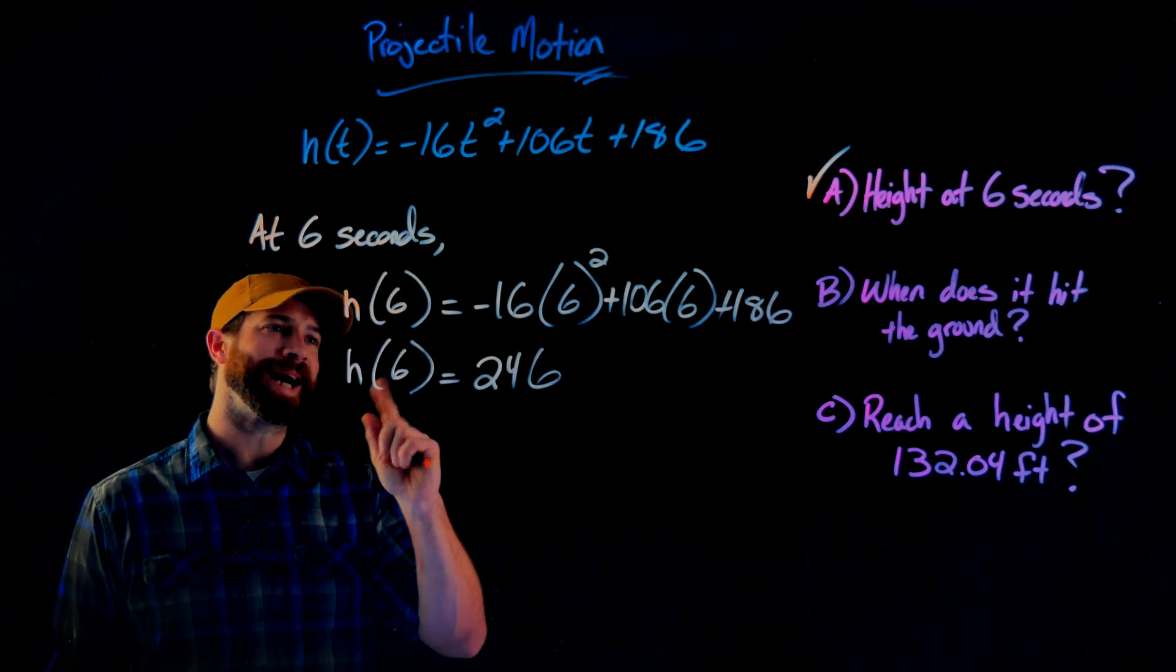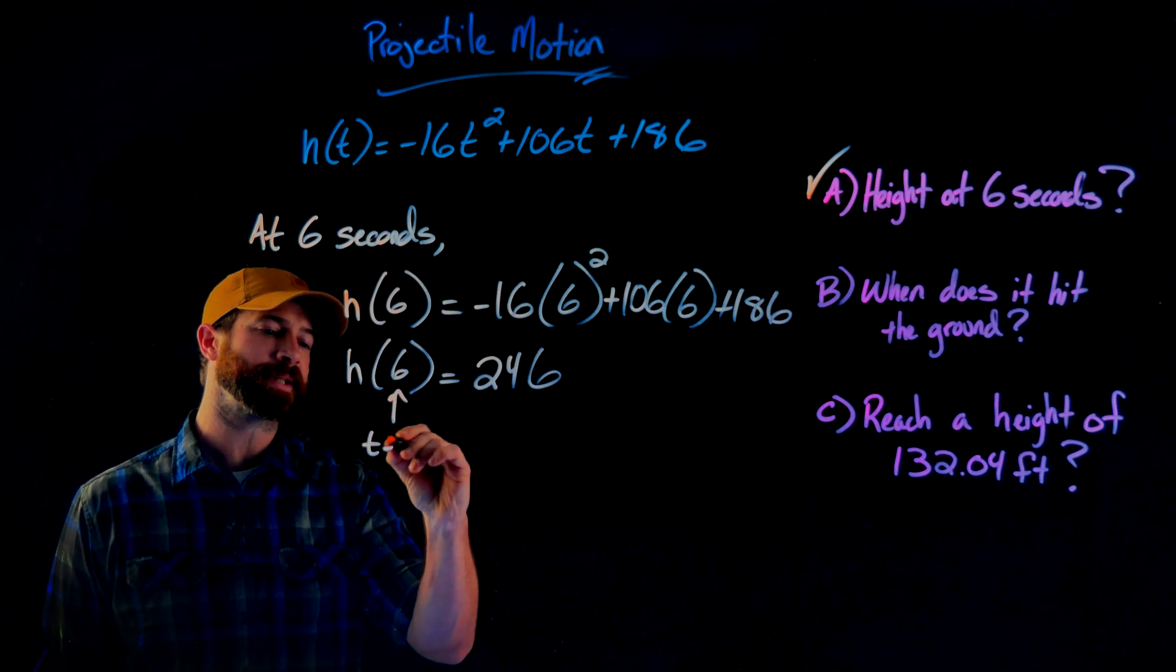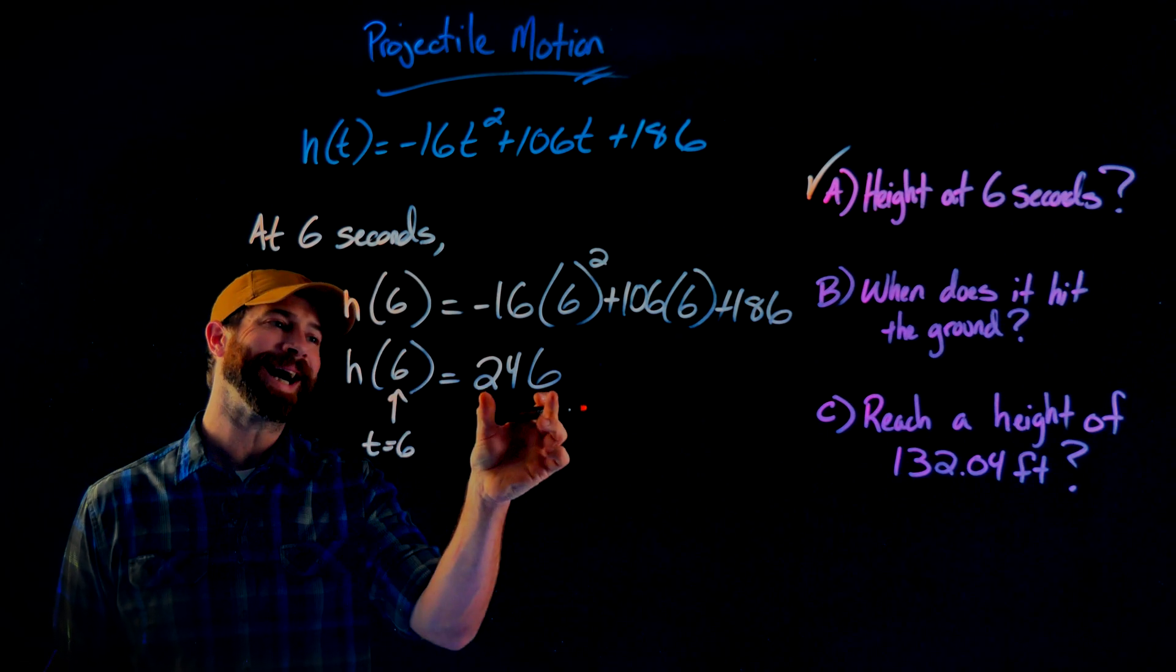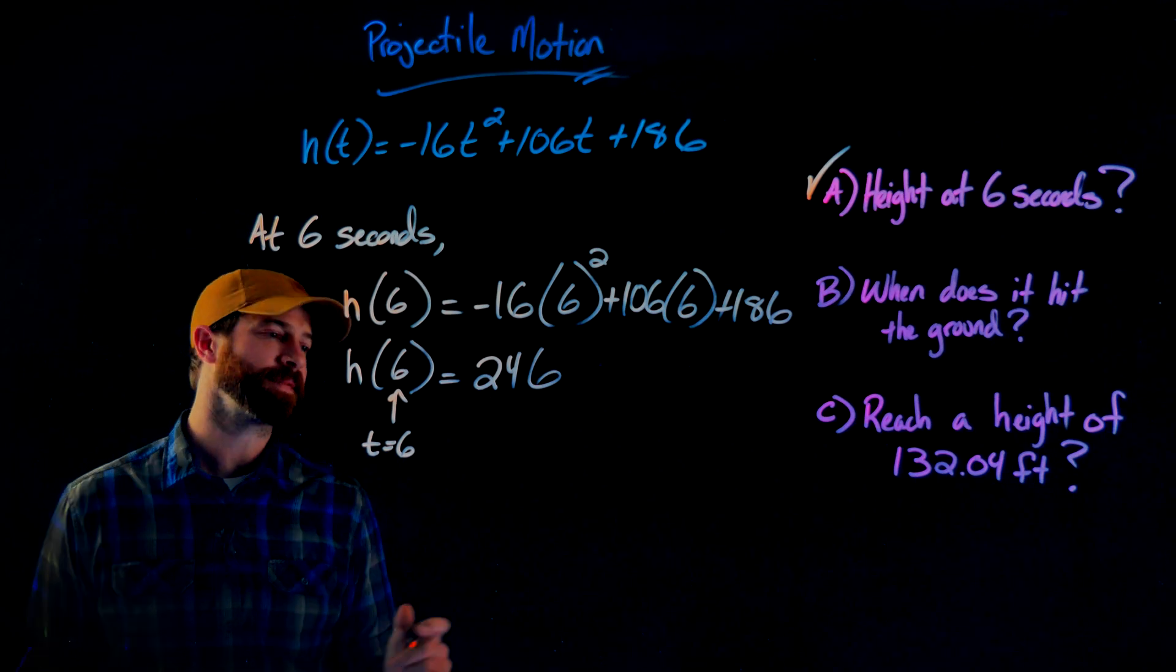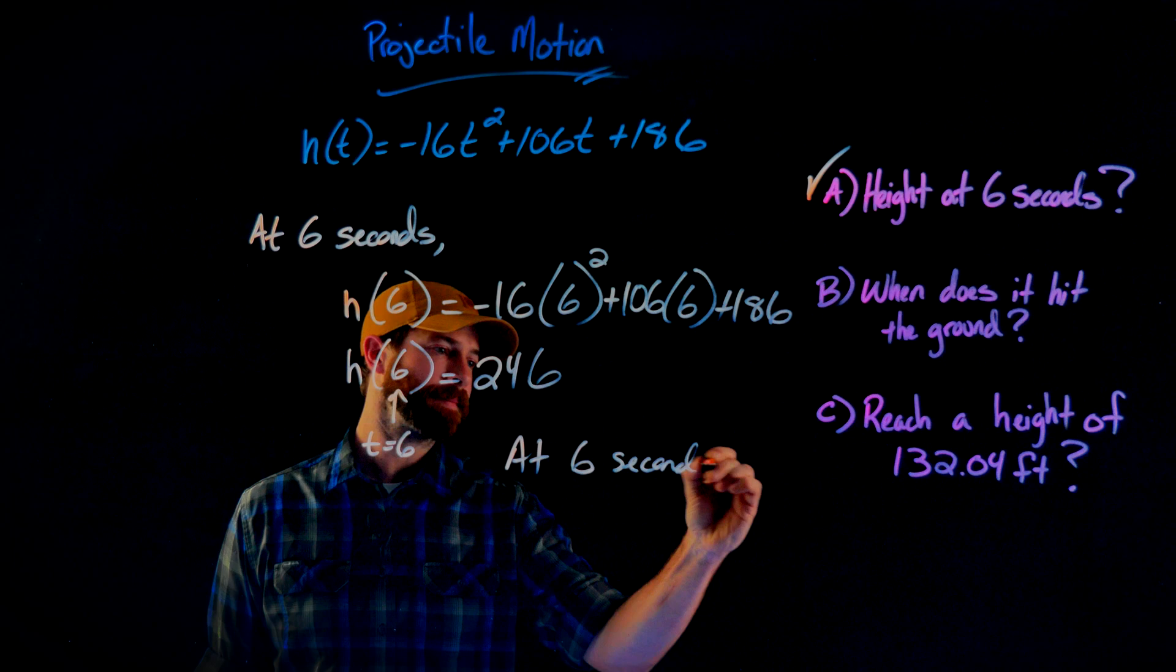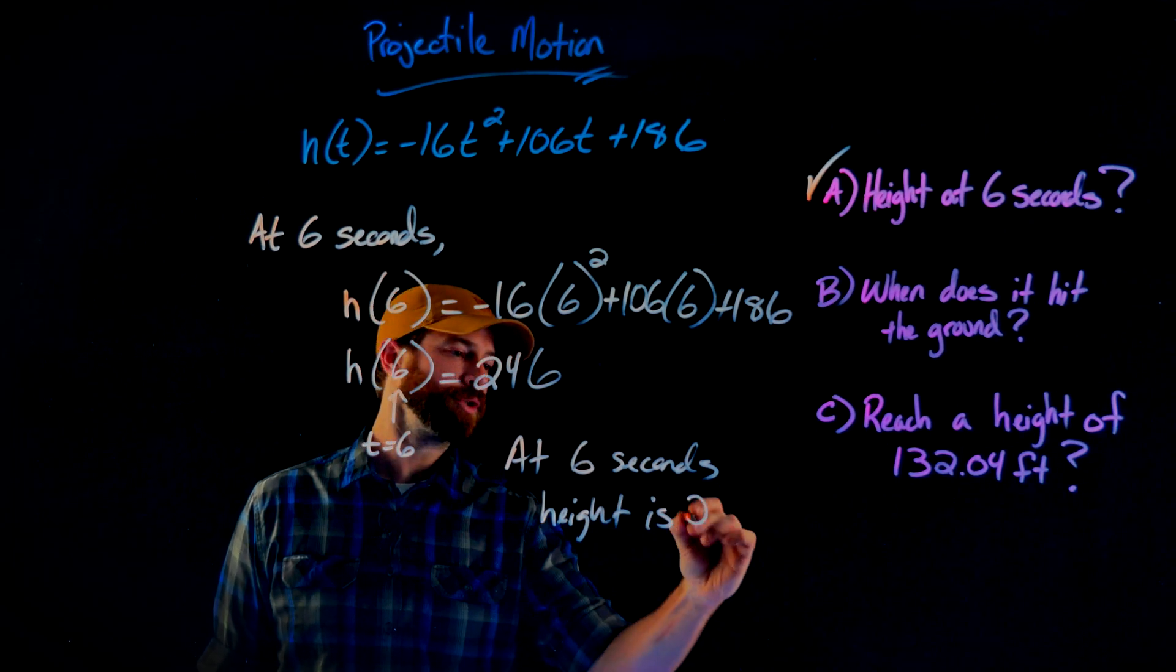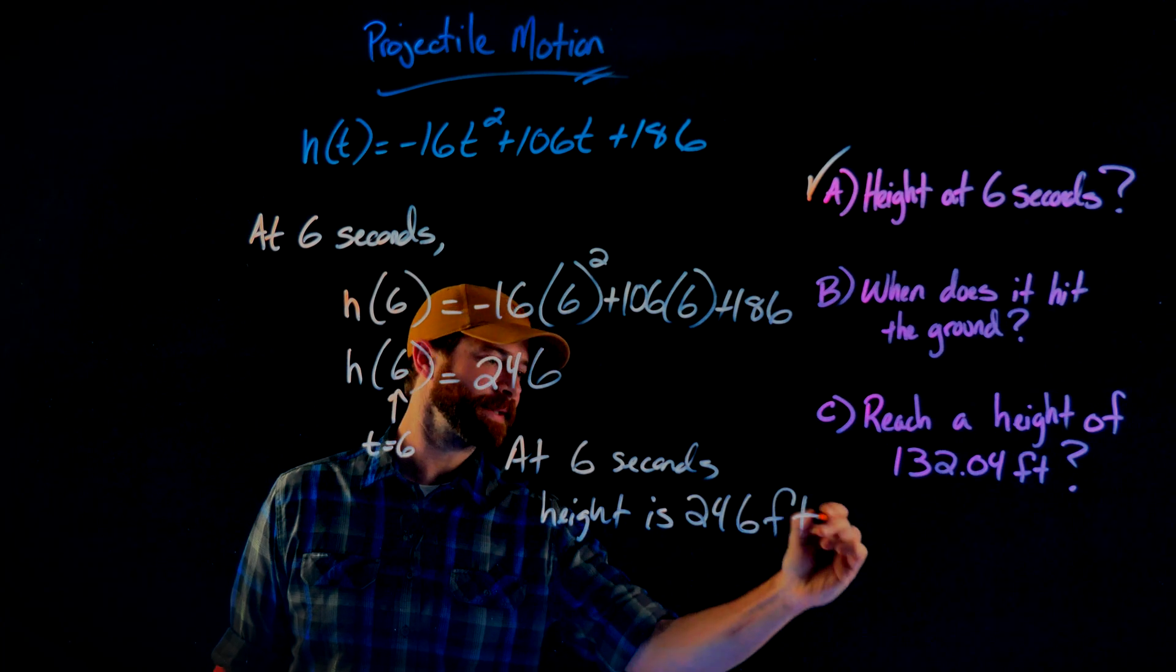After crunching the numbers, when I plug in six into this function, an input of t equals six, what I get out is the height is 246 feet. So at six seconds, the height is 246 feet.